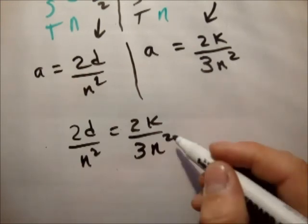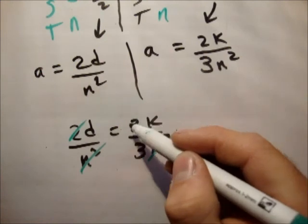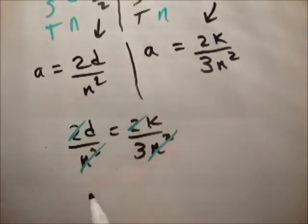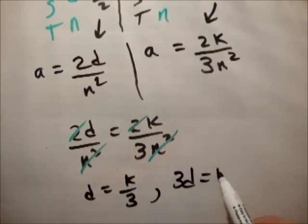What can we do? We can cancel the n squared, for example, for the first part and the 2s. So, we get d is equal to k over 3 or 3d is equal to k. Correct. That's what we're asked to find. So, that was pretty straightforward. Thanks for watching. Please pass it on to your friends and subscribe to my channel.